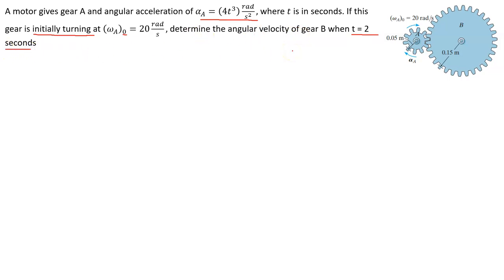A few things we need to know before getting started: the angular acceleration is given to us as a function, so we cannot use our kinematic equations, which are for constant acceleration. This acceleration is going to change with every passing second. Our initial velocity is not zero — our starting point is 20 radians per second, so these things are already in motion. They give us an interval of time, and we also know the radii: 0.05 meters and 0.15 meters for A and B.